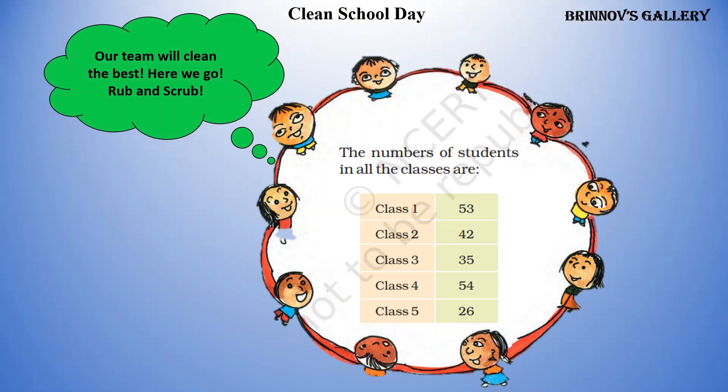Class 1: 53 students. Class 2: 42 students. Class 3: 35 students. Class 4: 54 students. Class 5: 26 students.